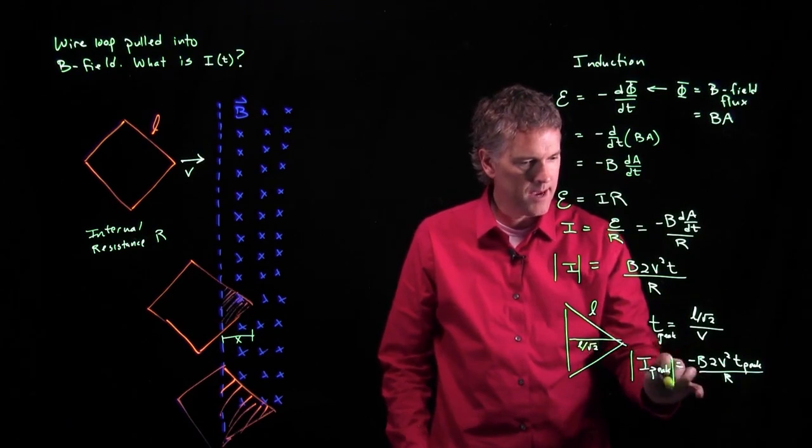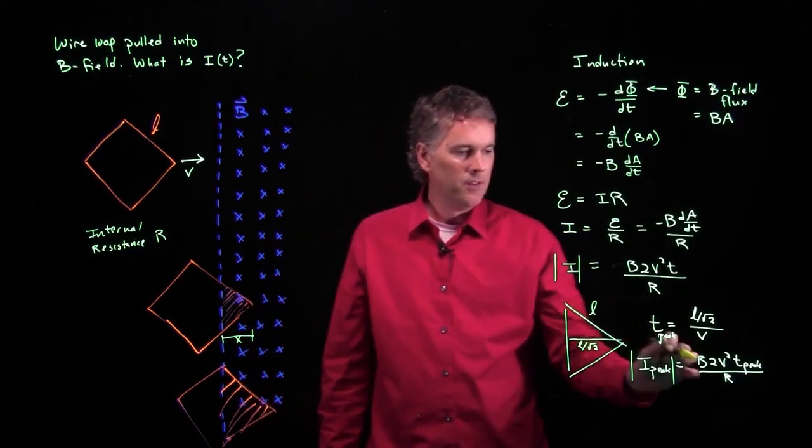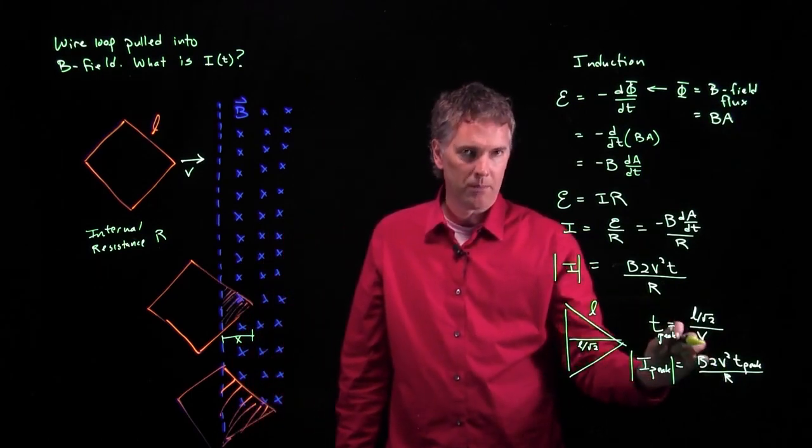So we're just going to say the magnitude of I and then I'm going to take off this negative sign right there. We'll say the magnitude there and we'll take off that negative sign right there. This is how you calculate what the peak current is.